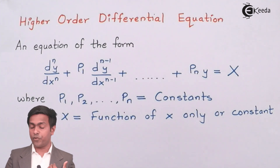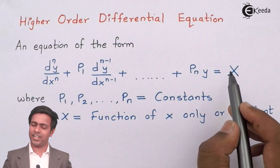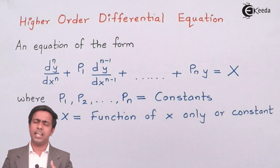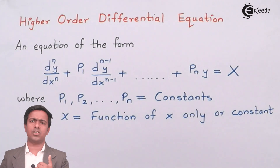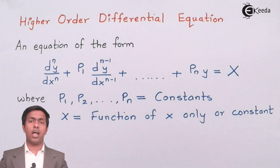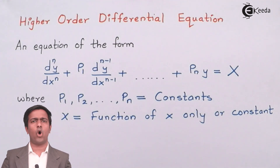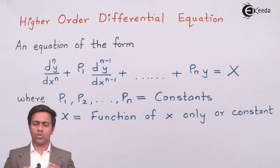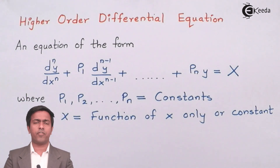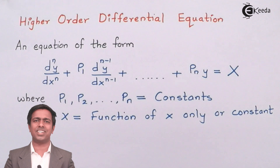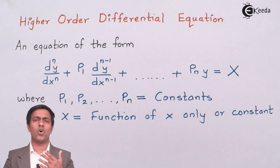One more thing to note: if you observe the right-hand side, I have written capital X. Capital X is any function of x only, or a constant — it should have only terms with the variable x or constants. So whenever you find such a type of equation, it is called a higher order differential equation with constant coefficient, or in some universities, a linear differential equation with constant coefficient.